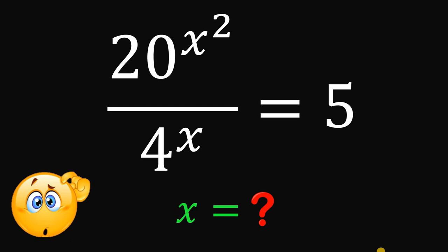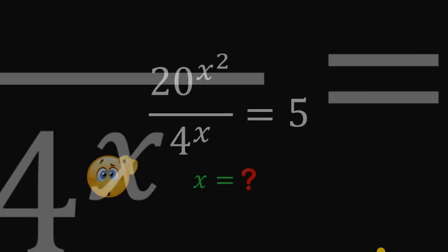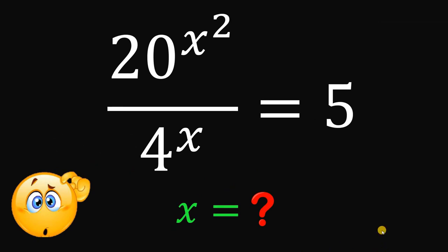Can you solve this math challenge? Here's the question: Solve for the real value of x that satisfies this equation — 20 raised to the power of x squared, over 4 raised to the power of x, equals 5.